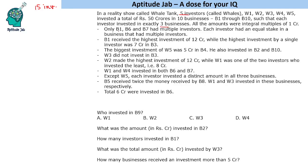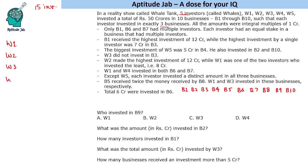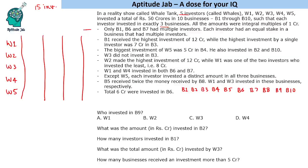We need to make a table to find out the investment received by each business and the amount invested by each person. We'll list businesses b1 through b10 and for the investors — whales w1 through w5 — we'll note their first, second, and third business investments along with their total investment.